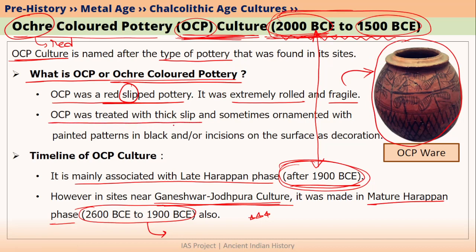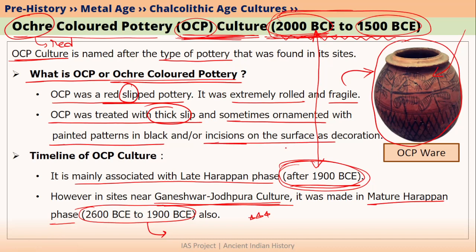The Ochre Coloured Pottery was treated with a thick red slip. Moreover, sometimes it was also ornamented with painted patterns in black colour. You can see black colour painted patterns here. Sometimes, incisions were also made on the surface, which also acted as decoration.